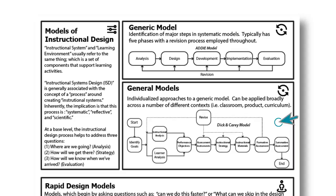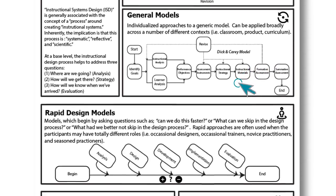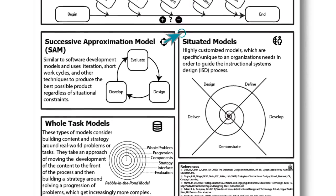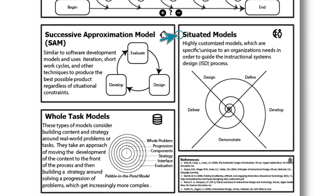With time, designers found that ADDIE and other general models often presented somewhat of a rigid structure to the design process, and some could not adapt their work to those more general models. They found a need to transform the general models into approaches which were more geared to their own organization. Thus, situated models of instructional design took shape. These types of models considered the situation in which the design process is going to take place, and modified and customized their model accordingly.